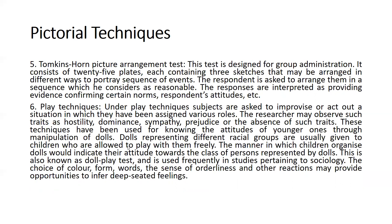The Tomkins-Horn Picture Arrangement Test is applicable for group administration. It consists of 25 plates, each containing three sketches that may be arranged in different ways or portrait sequences of events. The respondent is asked to arrange them in a sequence they consider most visible. Responses are interpreted as evidence confirming certain norms and the respondent's attitude.